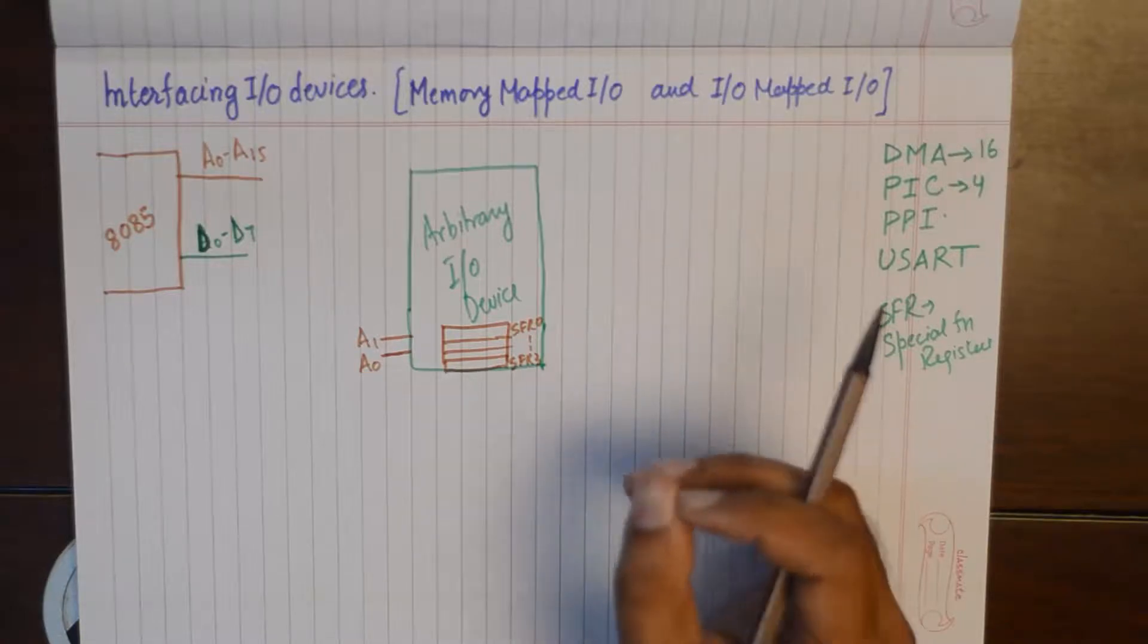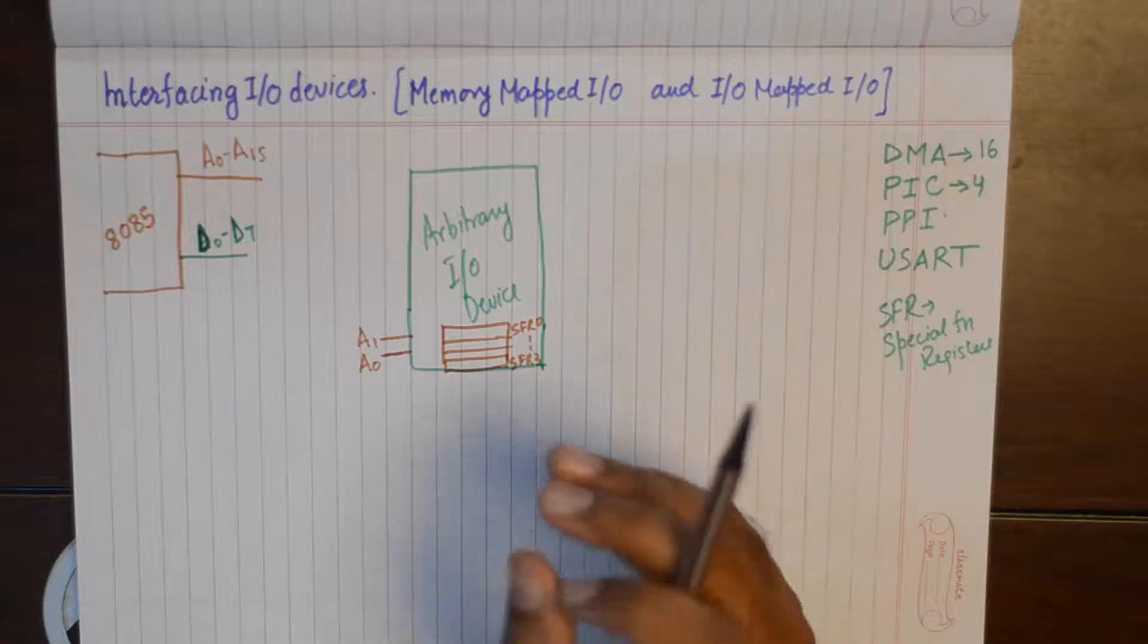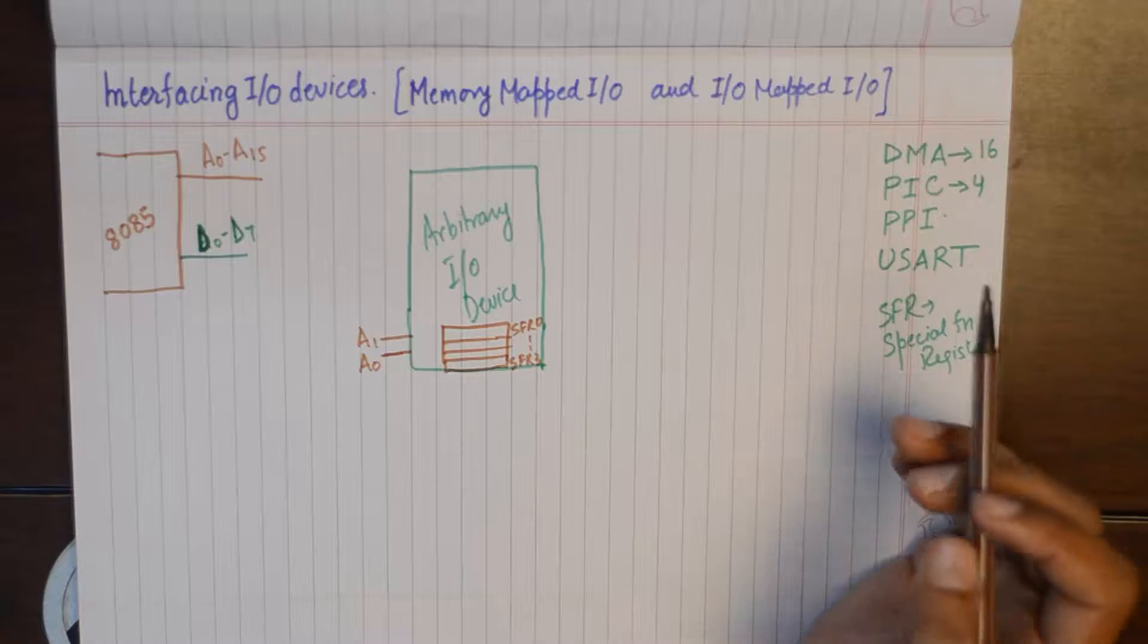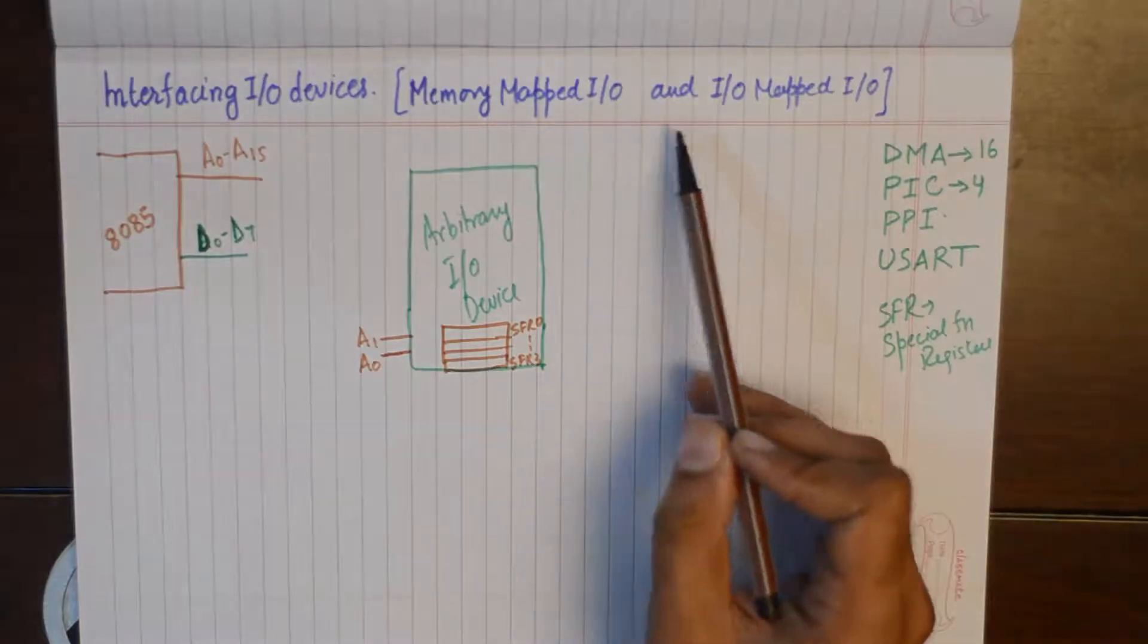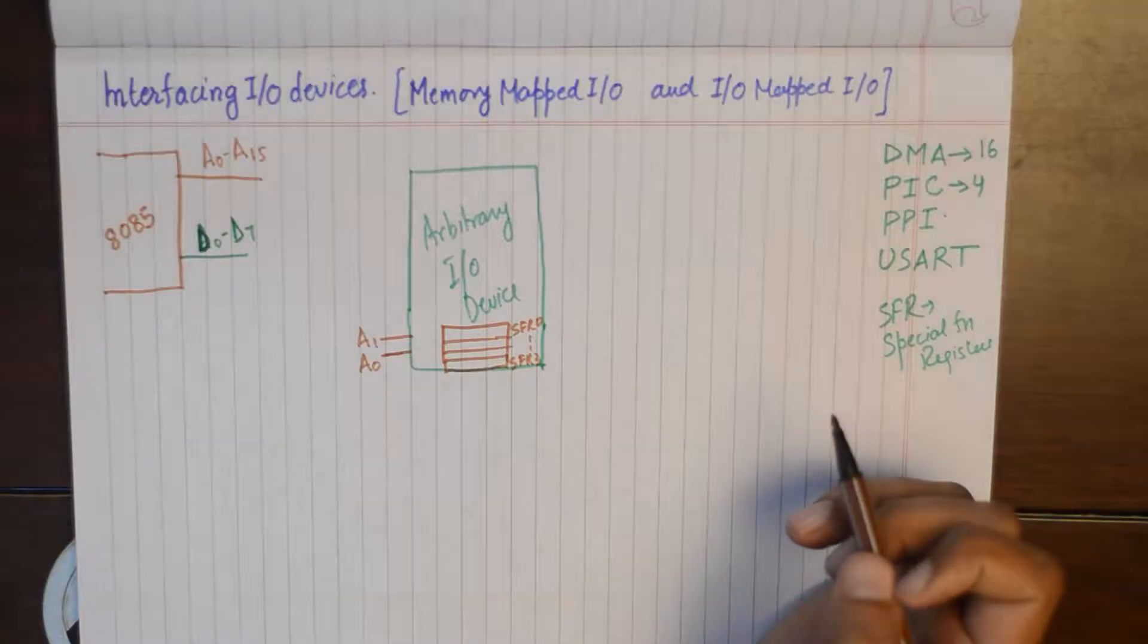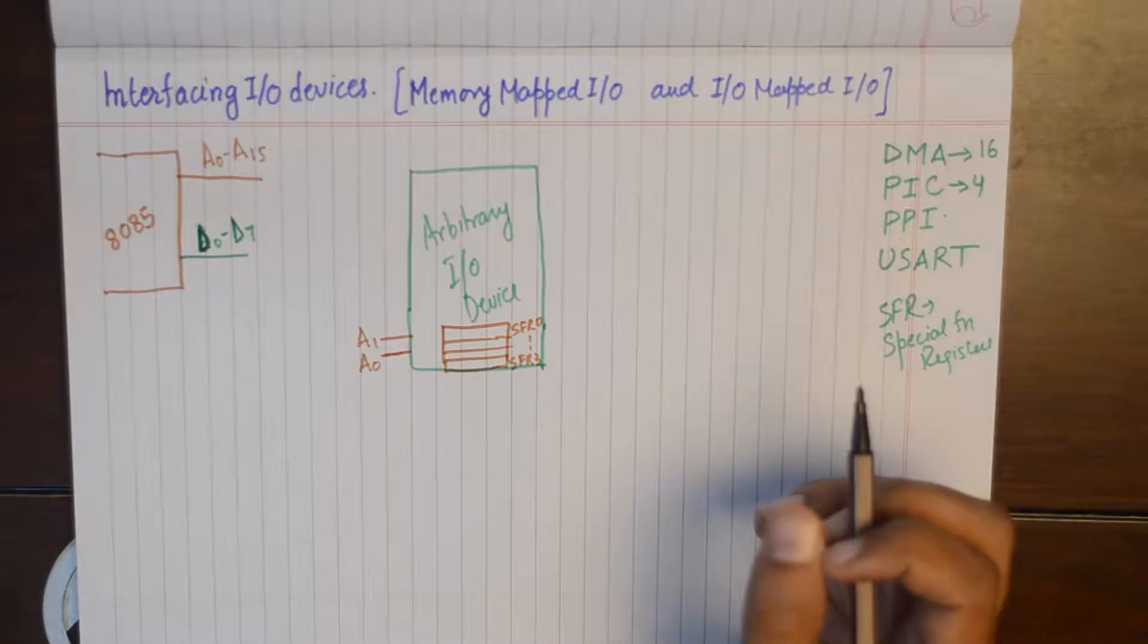Now it's up to us that we want to generate an address as long as 16 bits to address these just 4 locations in the I/O device, or we can use just 8 lines of addresses to generate an address for the special function registers inside I/O. And only this difference of generating a 16-bit address or an 8-bit address is referred to as memory mapped I/O and I/O mapped I/O.